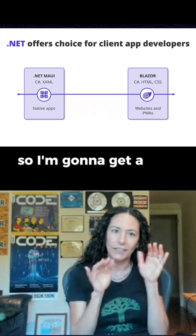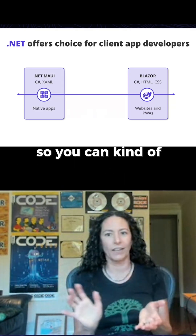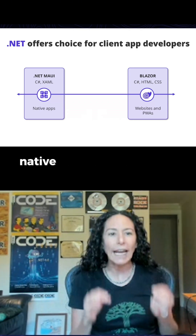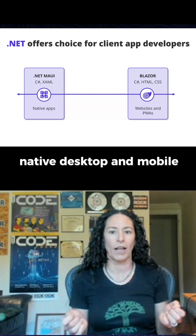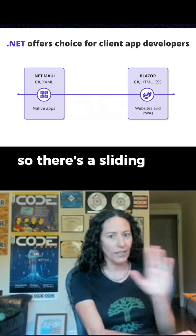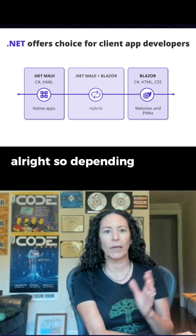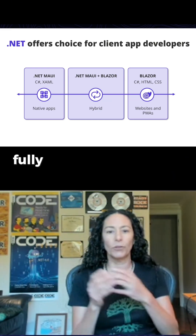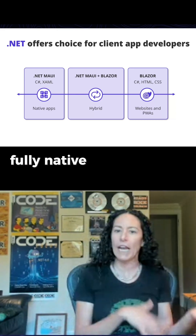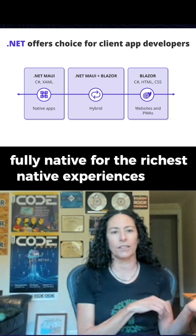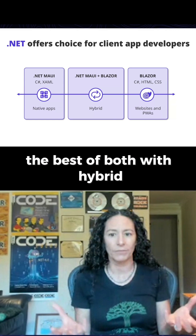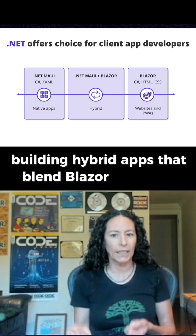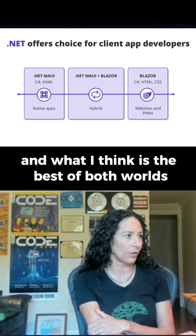I'm going to get a little bit more deeper into Maui so you can kind of understand the lay of the land here. Maui lets you build these cross-platform native desktop and mobile apps with a single code base. So there's a sliding scale here — depending on what your application needs, you can choose the right mix for you. Fully web if you want the most reach, fully native for the richest native experiences, or the best of both with hybrid. So today I'm going to talk to you about building hybrid apps that blend Blazor and Maui in what I think is the best of both worlds.